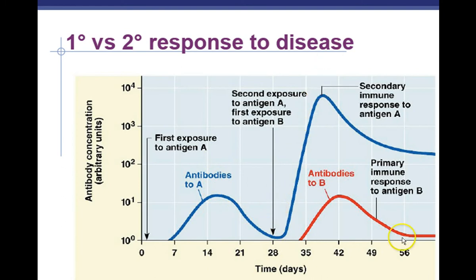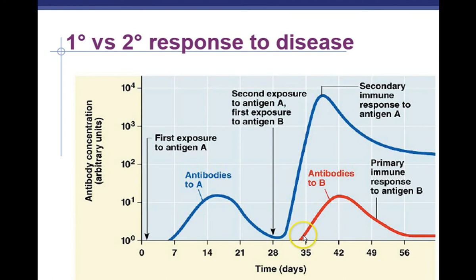Here's the problem with viruses: they mutate quickly. If that flu virus mutates and is no longer recognized by your immune system, or if some other invader attacks you, you have to start the whole process over again — going through the primary response, which takes about 7 to 14 days to build memory cells and make antibodies.